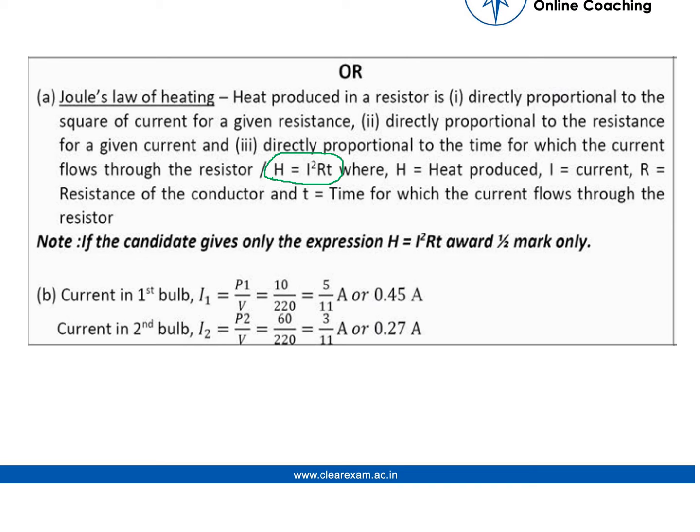Now the second part in the bulb question, we would be solving this by the formula I equals P over V. So here we know that power, we know the voltage, what we have to calculate is current.